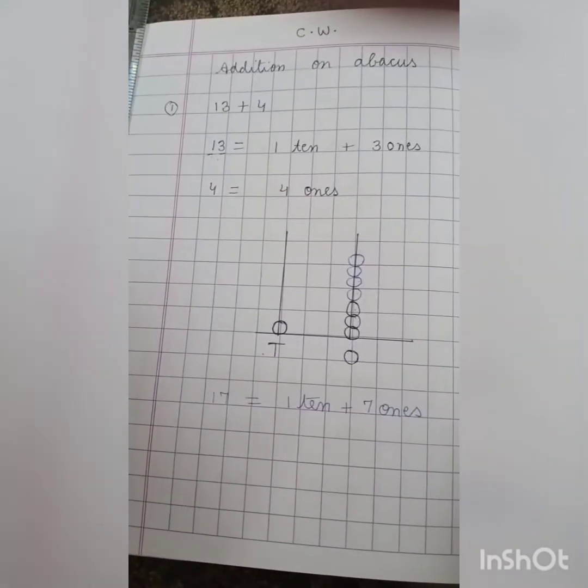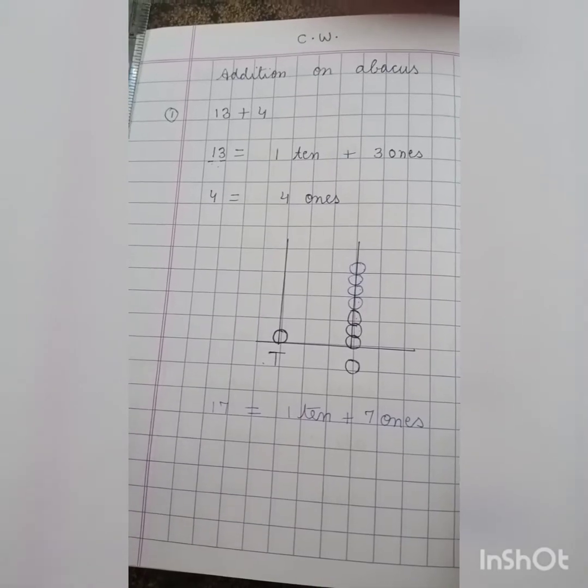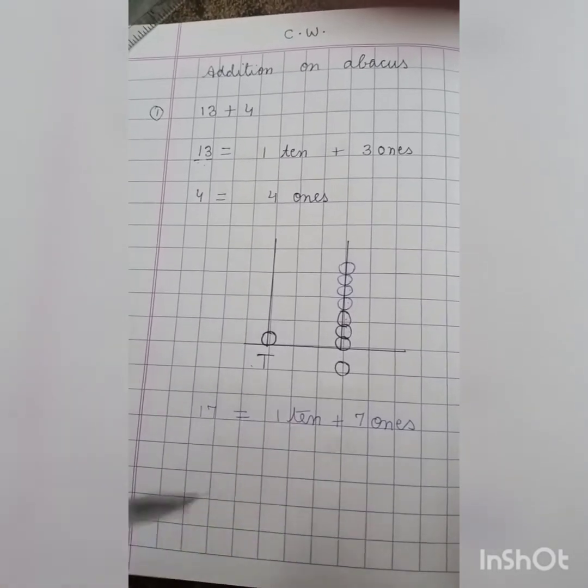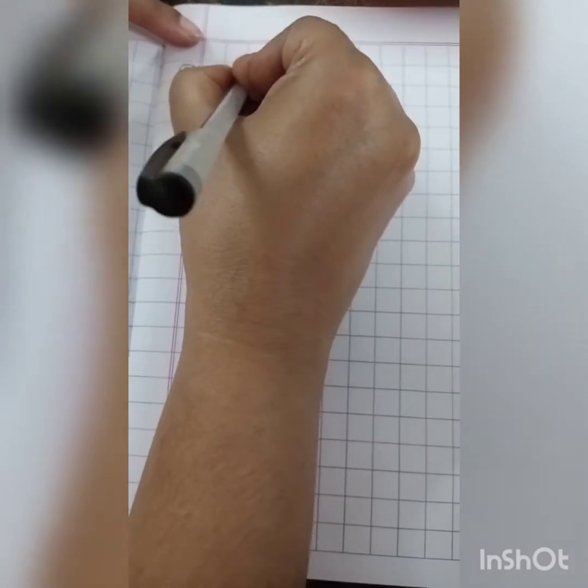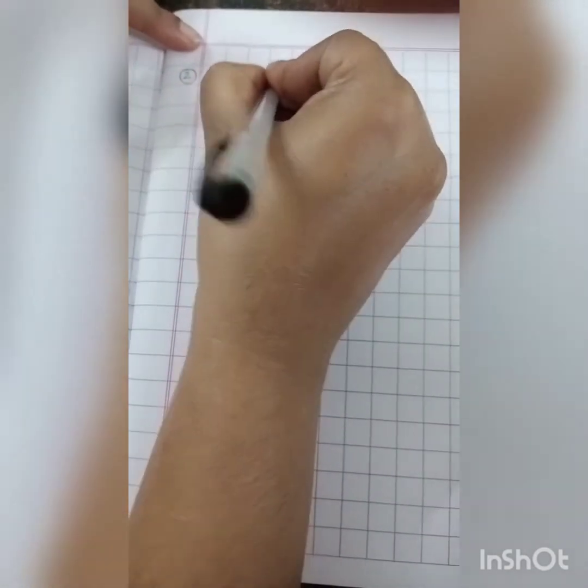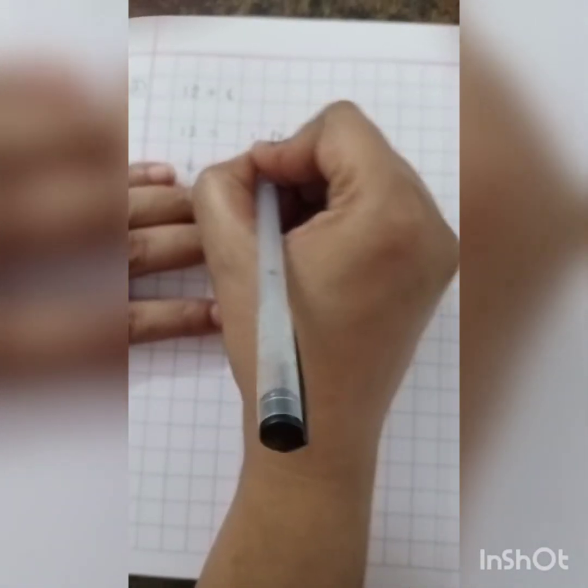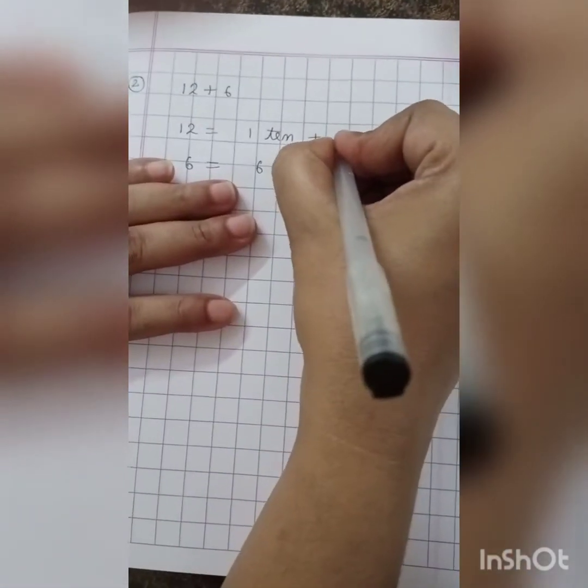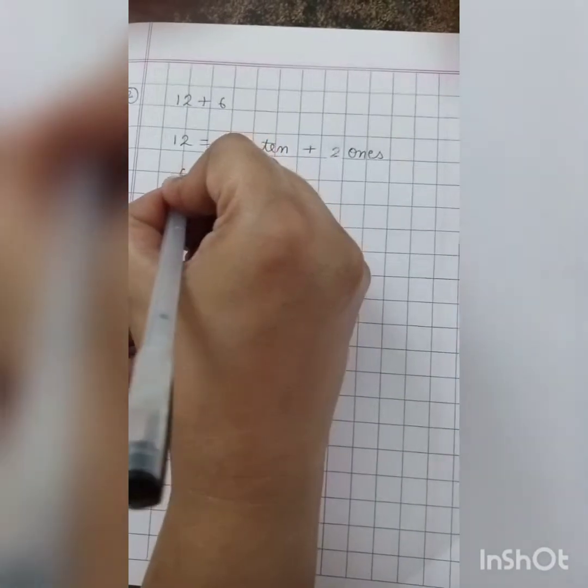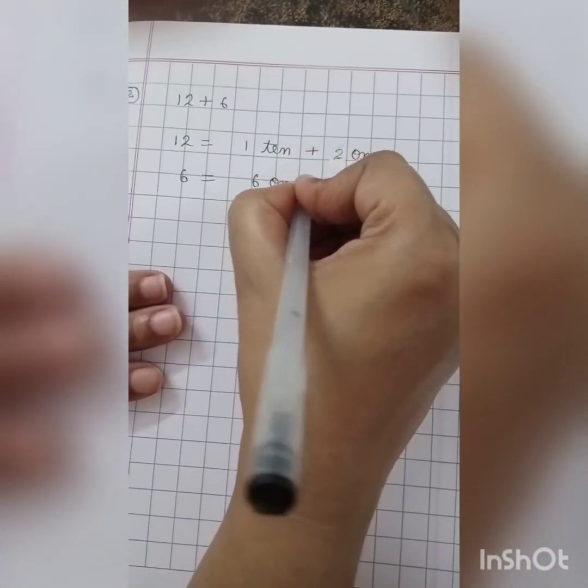Okay. Now what I think now? I will make one more. I will do what? I will add one more sum with you all. Then question number 2, and this time the question is 12 plus 6. So write 12 is equal to 1 ten plus 2 ones, and then we have to add 6, 6 is equal to 6 ones.